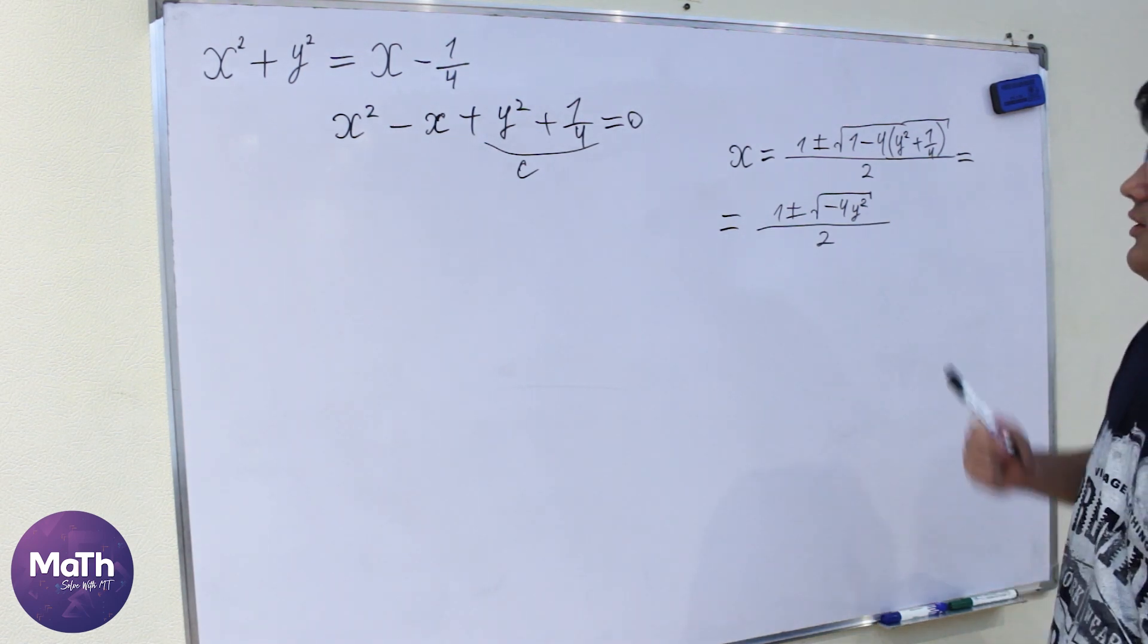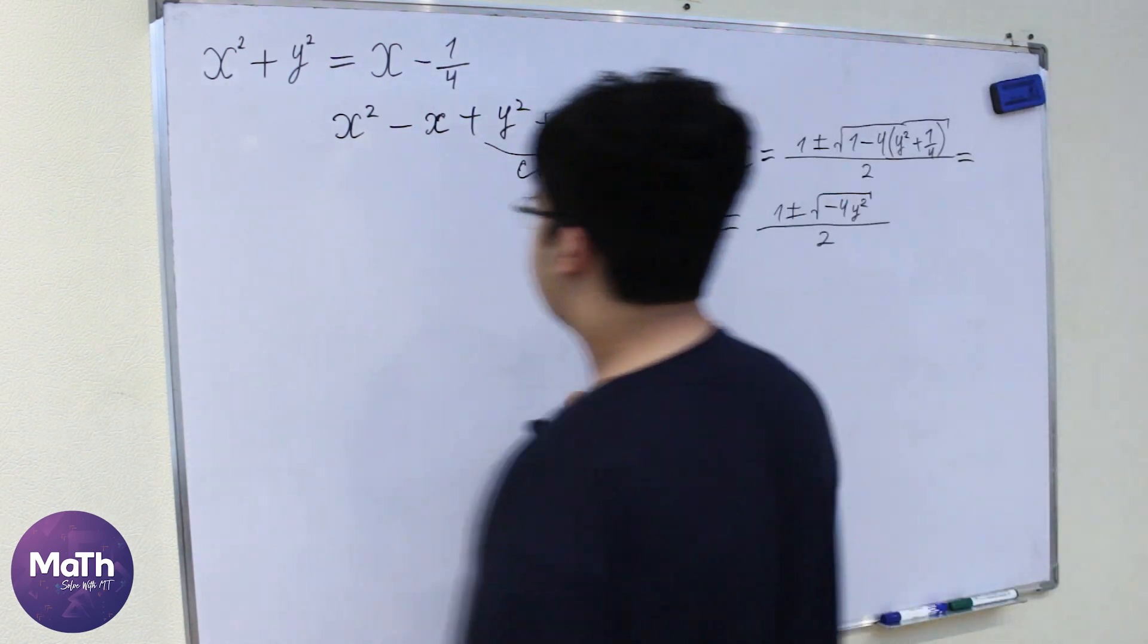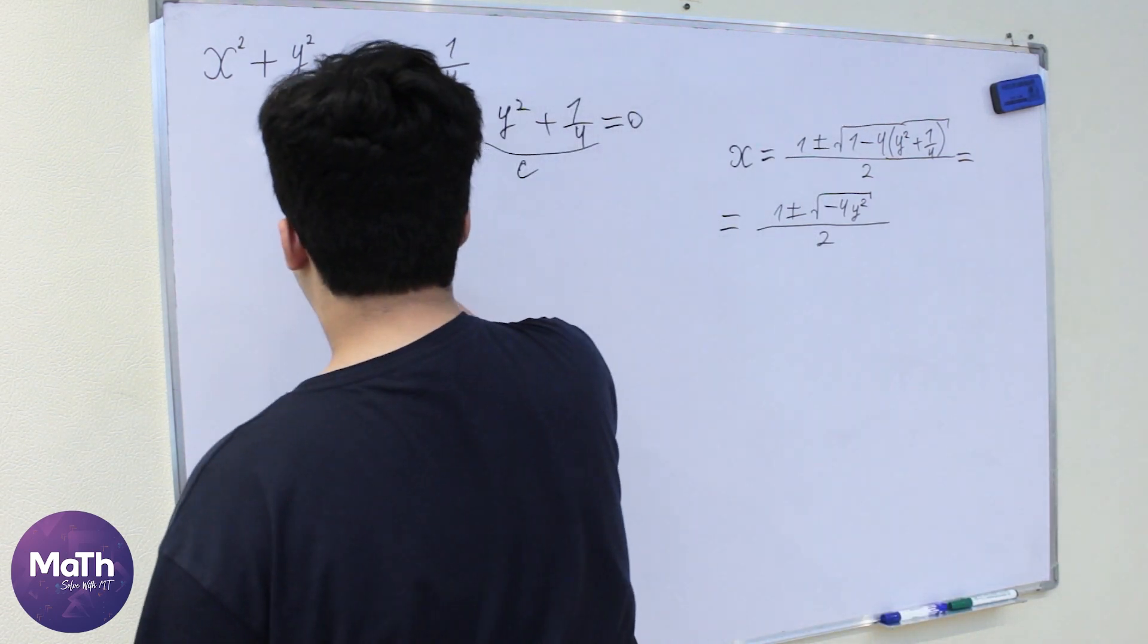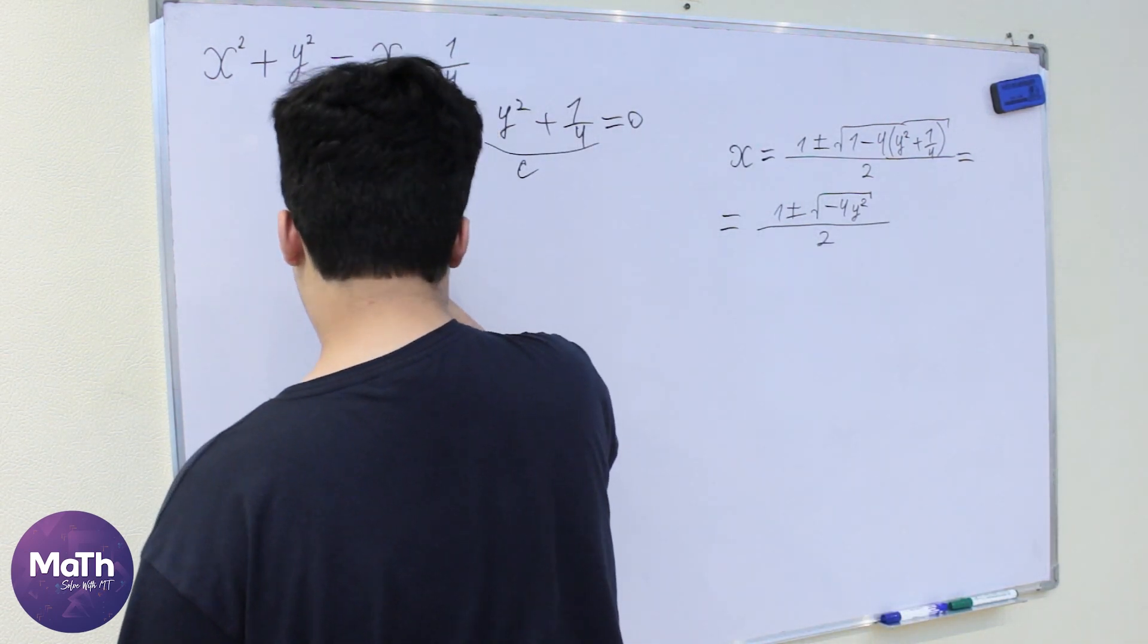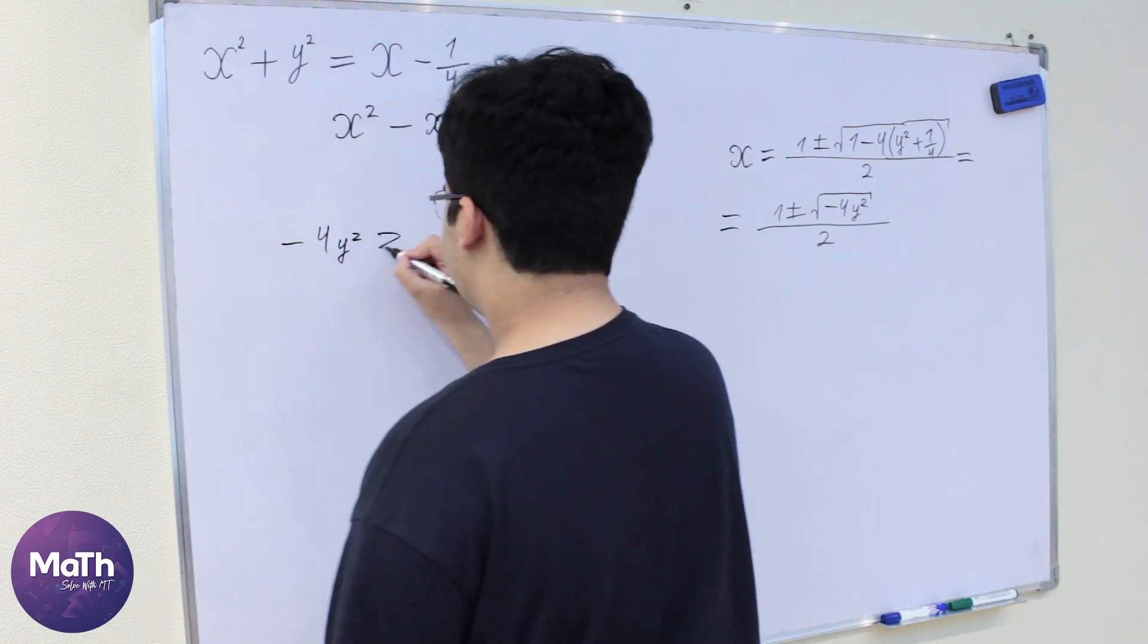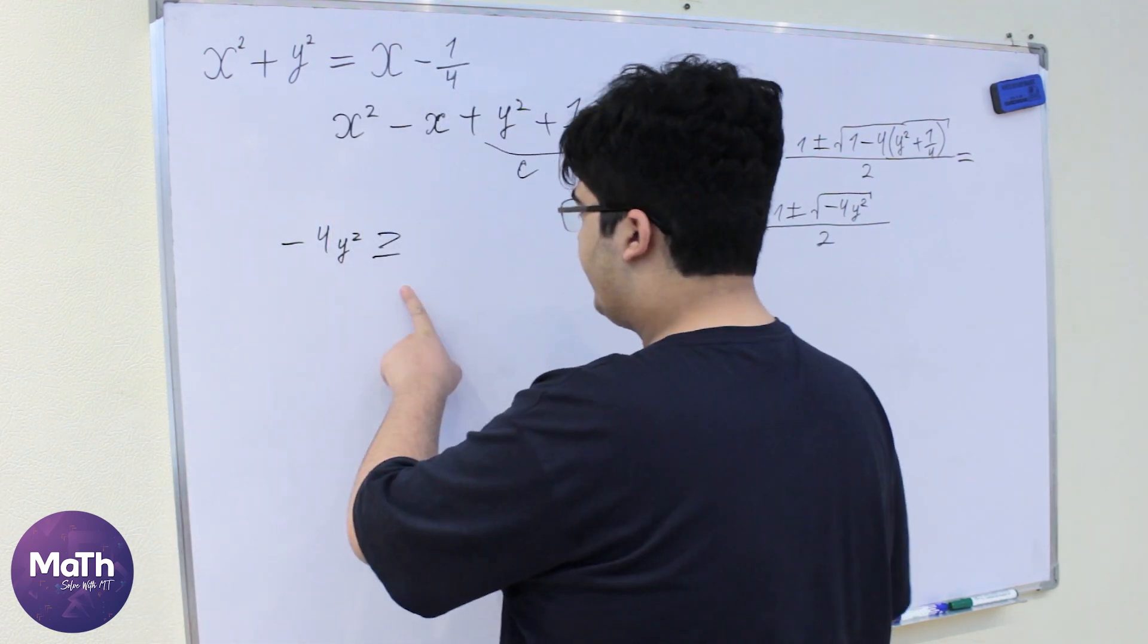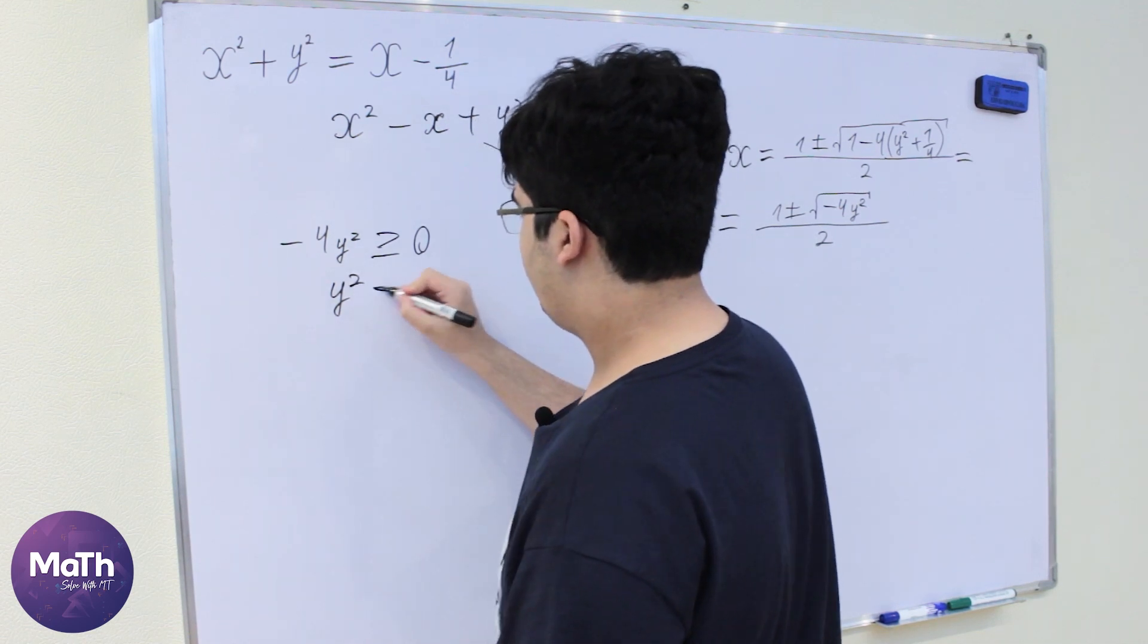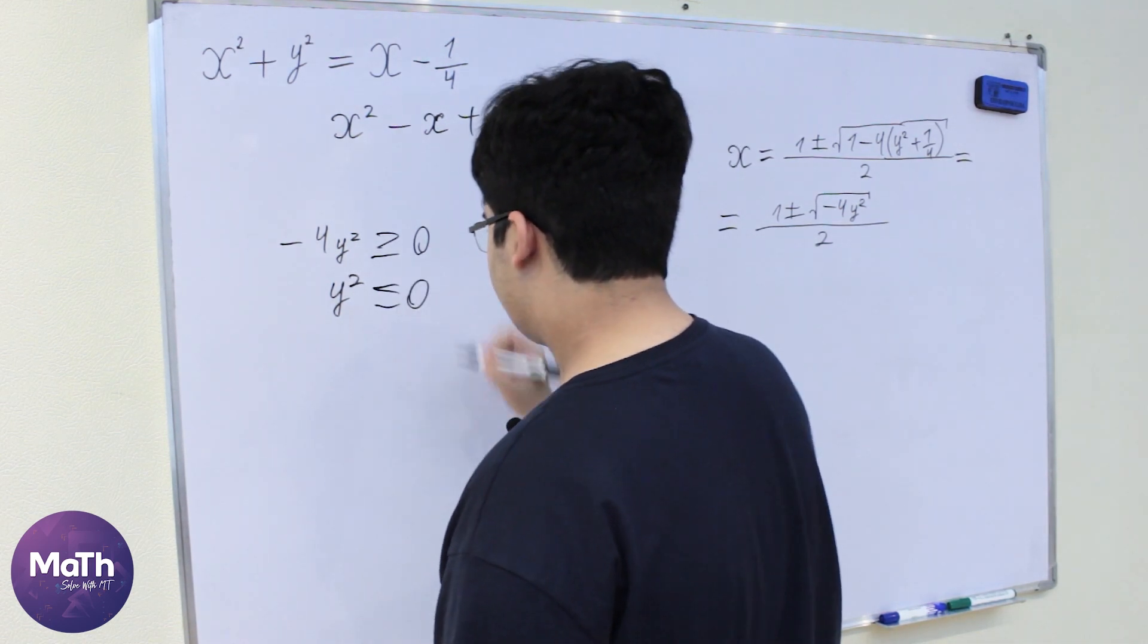So we know that the discriminant must be greater or equal to 0. So minus 4 y squared is greater or equal to 0. So y squared is less or equal to 0.